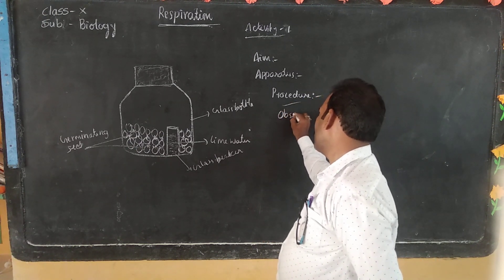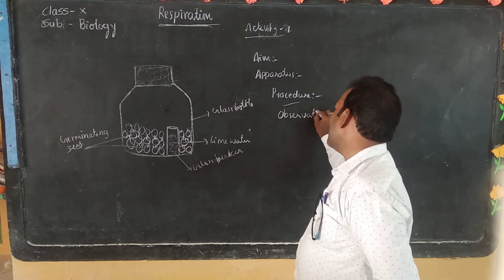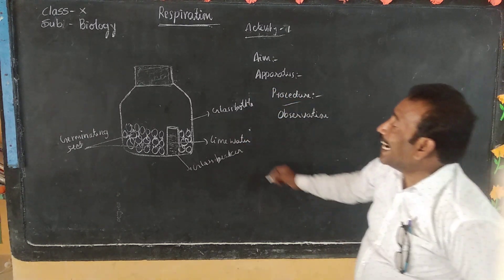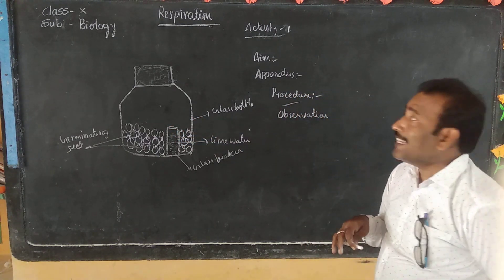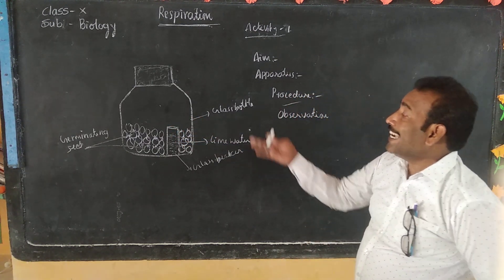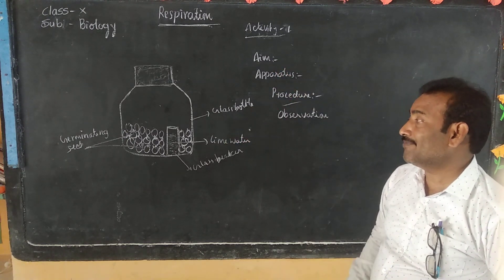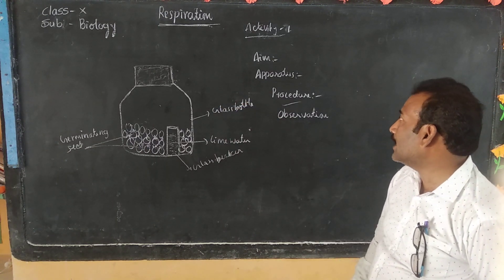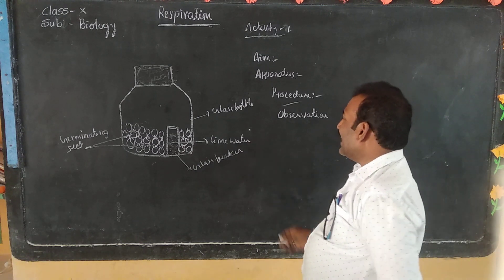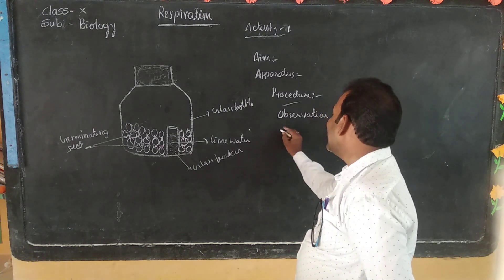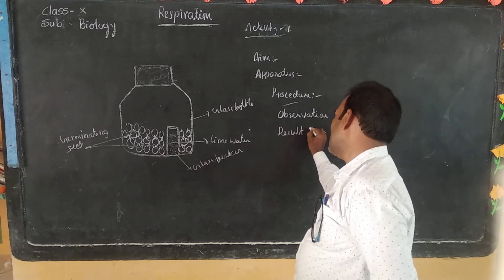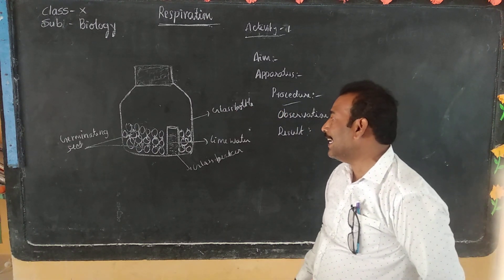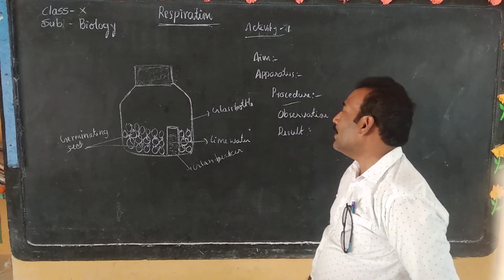Observation: After the time is over, you will observe that the lime water will turn milky white. Why did the lime water turn milky white? Because germinating seeds will respire, and during respiration, carbon dioxide is released. This carbon dioxide turns lime water to milky white. Result: This above experiment proves that carbon dioxide is released during the process of respiration.